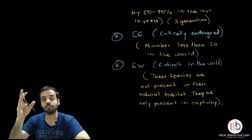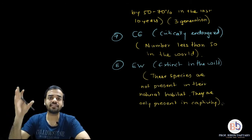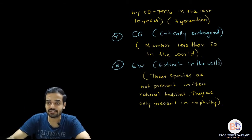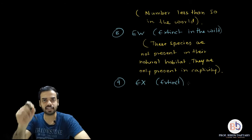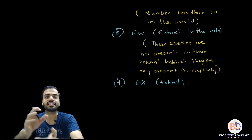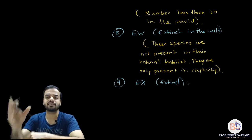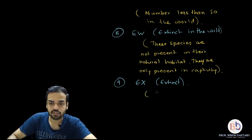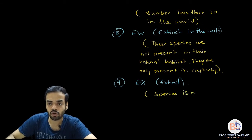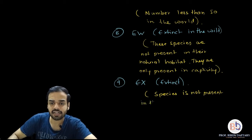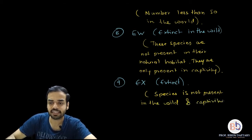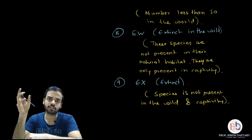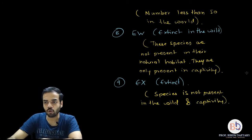The last and most important category in the entire Red List is EX — Extinct. Everybody knows what this means: not a single organism belonging to that species is present in the wild or in captivity. It is not present anywhere on Earth. The species is not present in the natural habitat and not present in captivity, so no organism belonging to that species exists on Earth. These are the nine conservation categories.